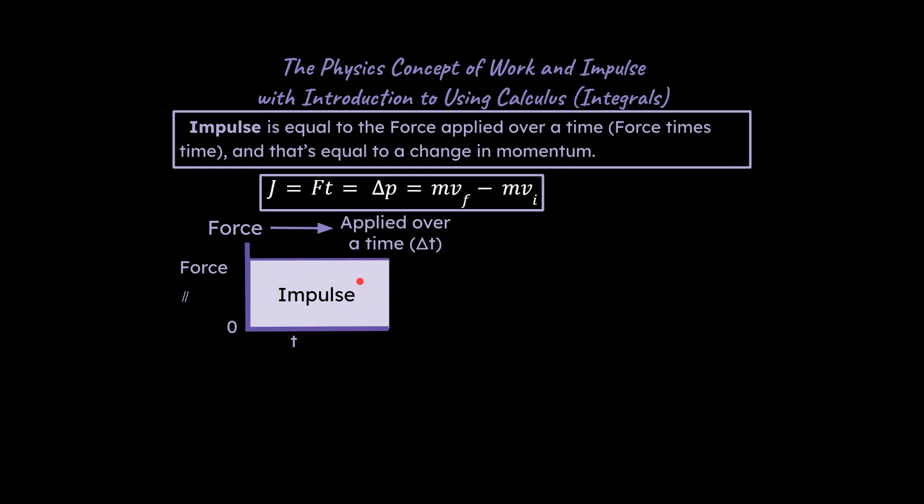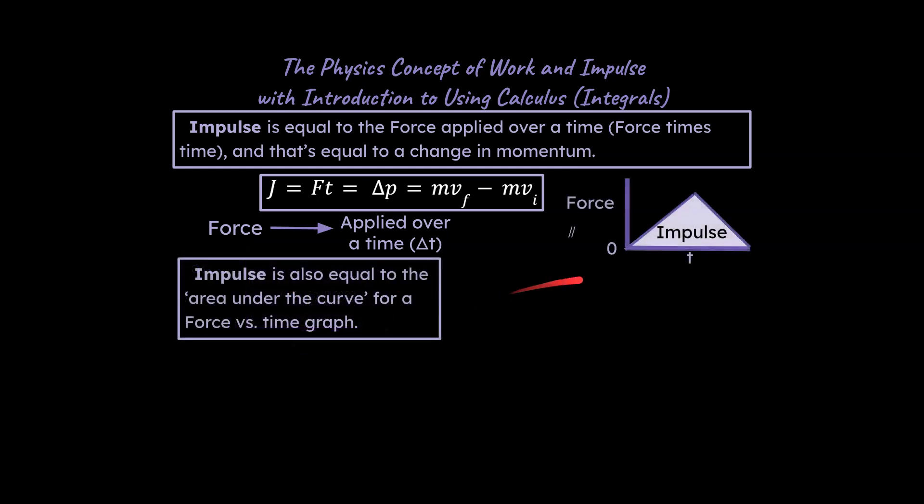What if we had force applied over a certain time? What would the area under the curve be? Well, that would be the impulse right here. And so what if we had a more complex curve? That would be two triangles. Well, we would add up the sum of the area of both triangles, of course, applied over a time. And that would give us the impulse, the change in momentum of the object.